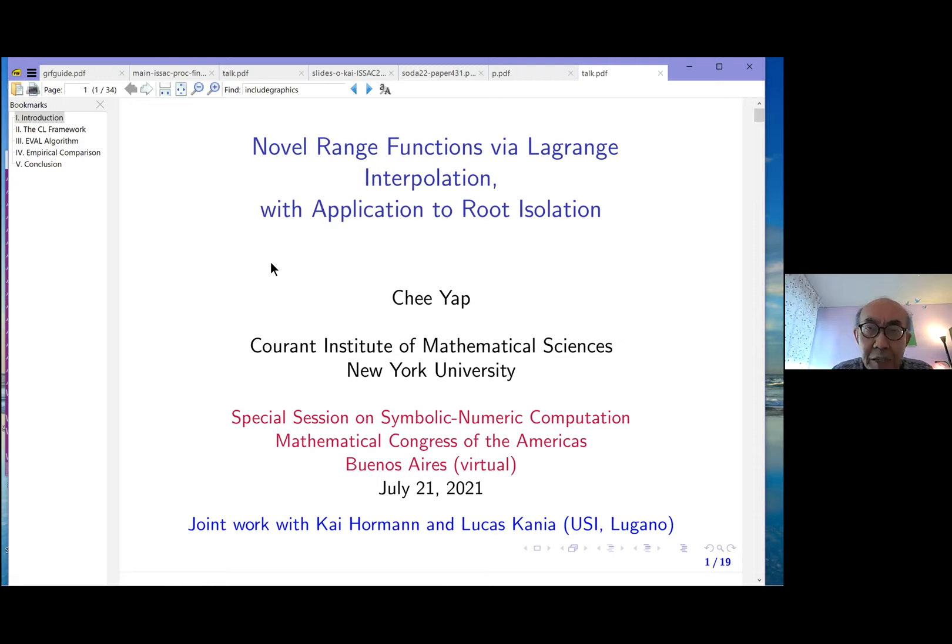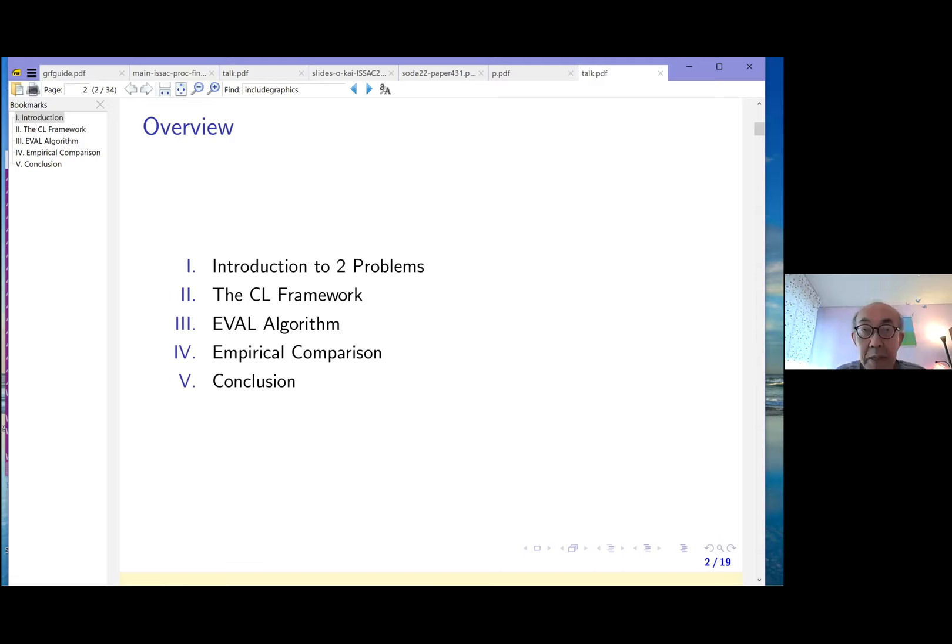This talk is about my co-authors, as I mentioned, Kai Horman and Lucas Kania at USI in Lugano, Switzerland. Novel range functions and root isolations. Those are the two topics we're going to talk about.